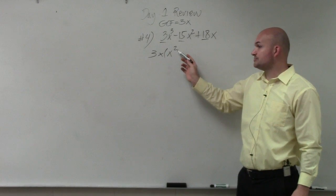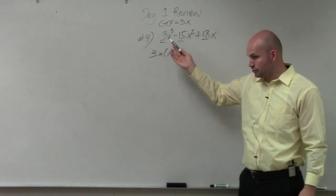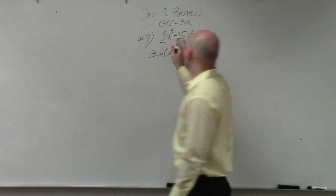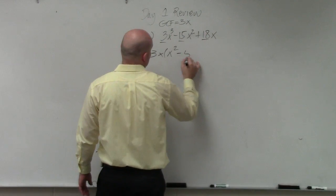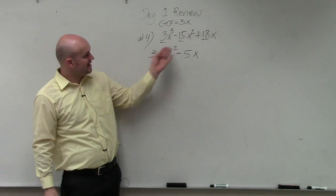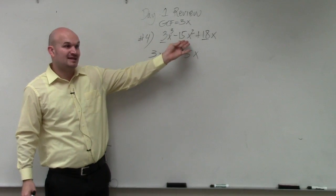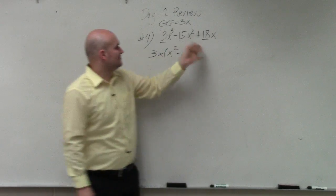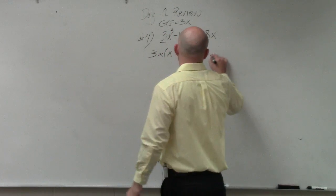3x times x squared is 3x cubed, right? Divide out 3x from here, I have negative 5x. Let's check our answer. 3x times negative 5x is negative 15x squared. And divide out 3x from 18x is a positive 6.